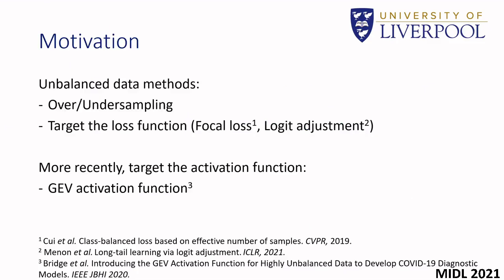Real-world data is invariably unbalanced, with one class often outweighing the other. Often there is a huge level of imbalance. Training on this data can lead to overfitting on the dominant class, with the smaller class being overlooked. Most methods to overcome this problem either resample the data, which can lead to overfitting, or target the loss function.